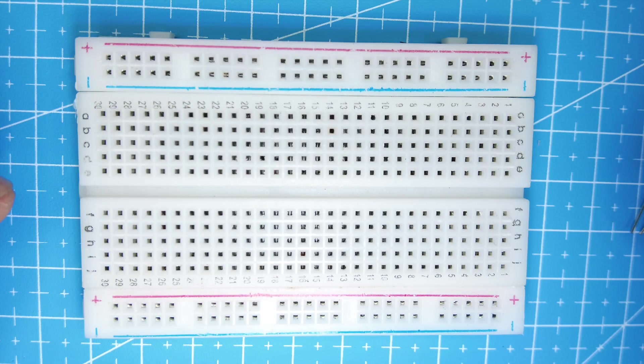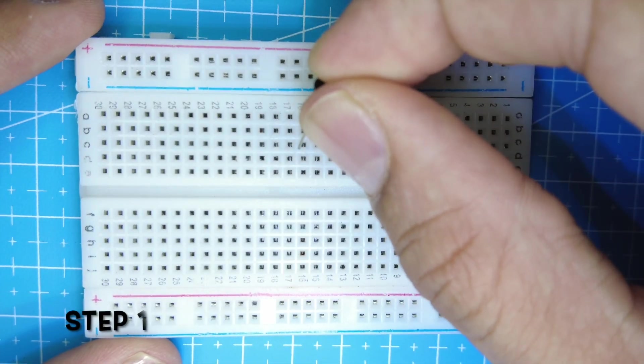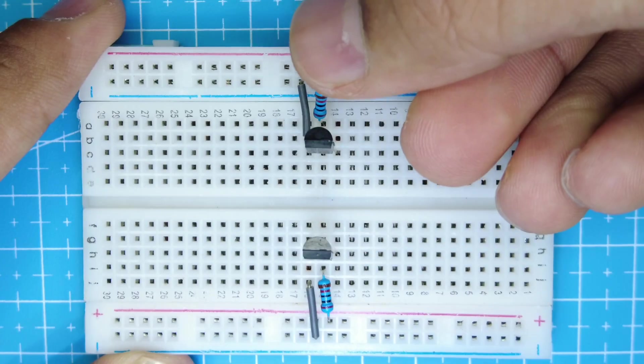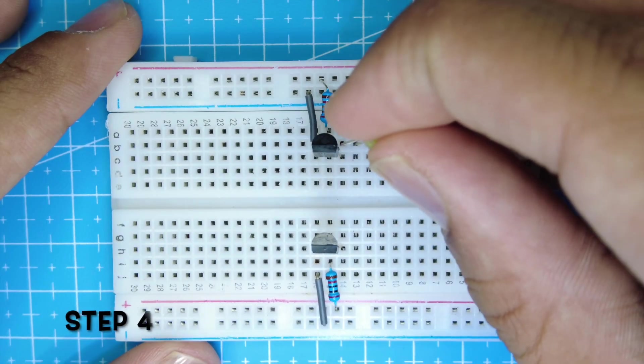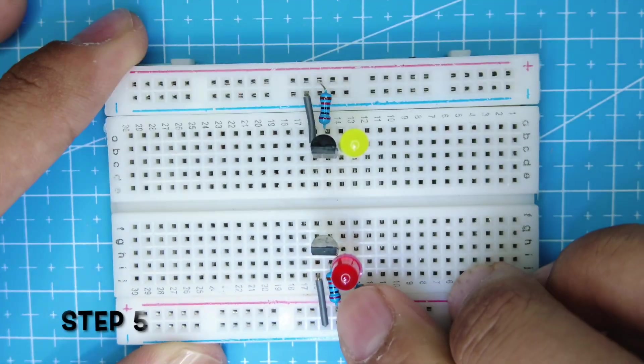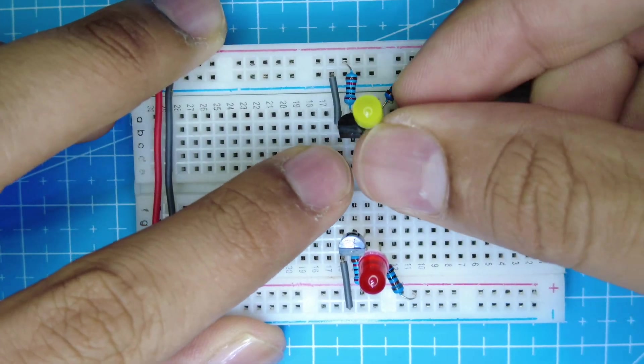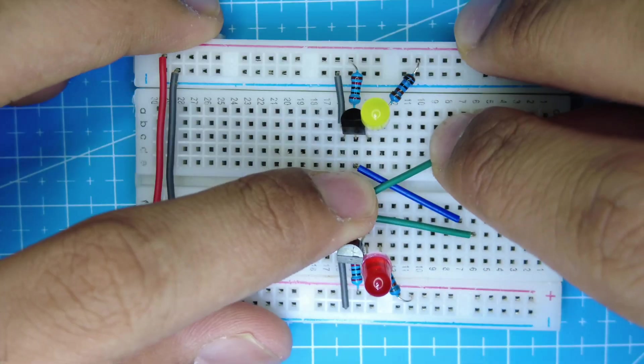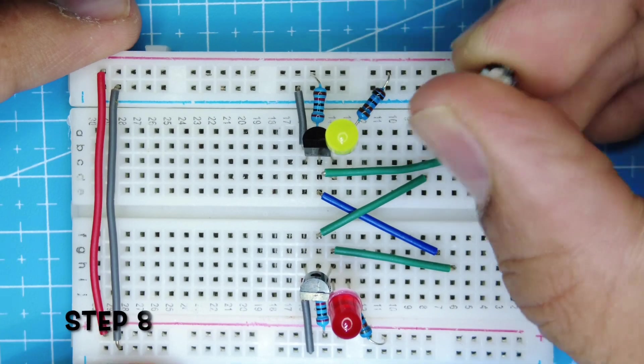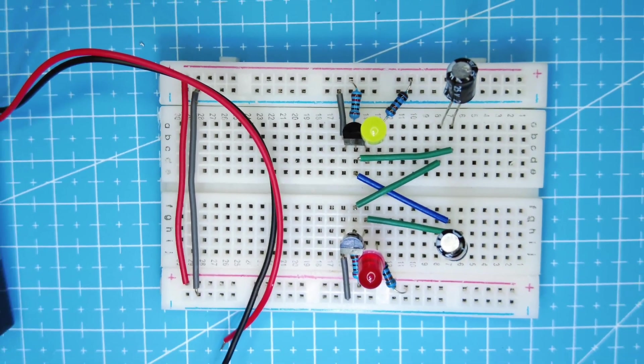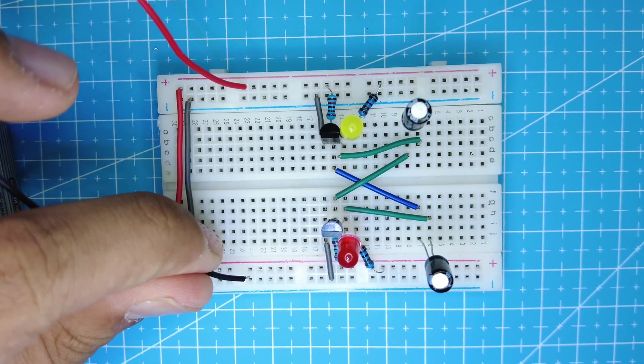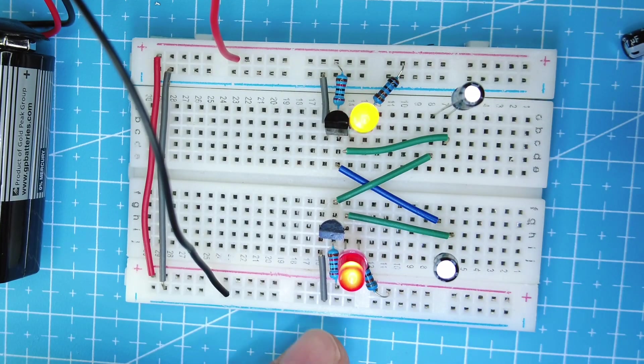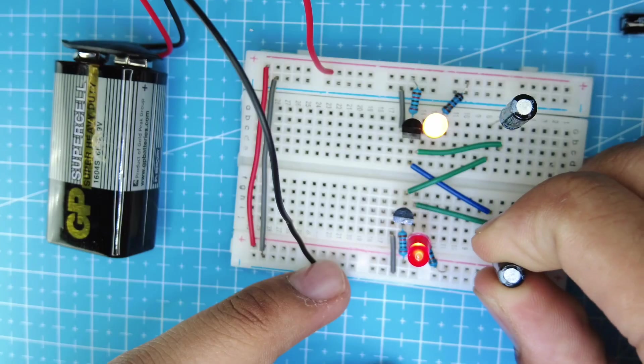Let's get started. So here I'm going to show you how you can change your LED blinking sequence. Here I have used a 10 µF capacitor and you can see this blinking is too fast. And now I'm going to use the 100 µF capacitor.